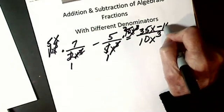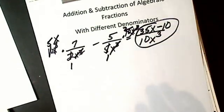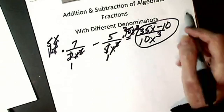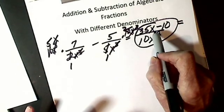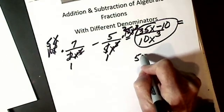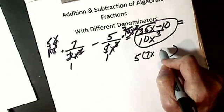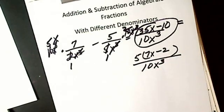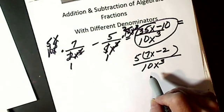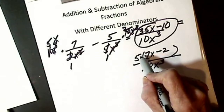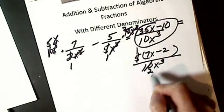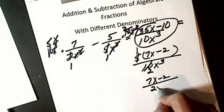I should look to see if I can factor anything or cancel. I can't cancel because I've got terms. I could factor — I can factor out a 5 and get 5 times (7x minus 2), divided by 10x cubed. Then I check: can I cancel my 5 and my 10? If they're factors, I can; if they're terms, I can't. This is a times and this is a times, so I am allowed to cancel. 5 into 5 is 1, 5 into 10 is 2. My answer is (7x minus 2) over 2x cubed.